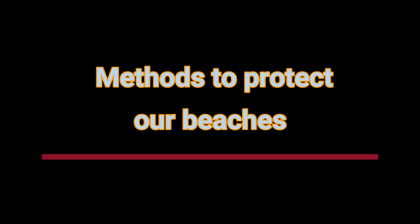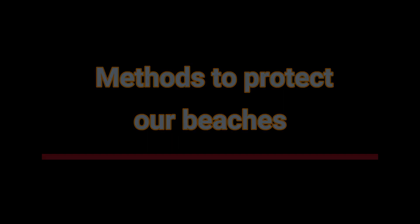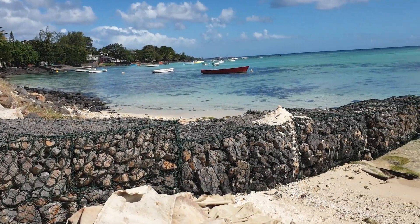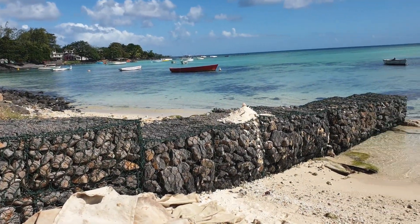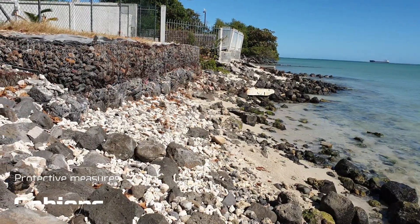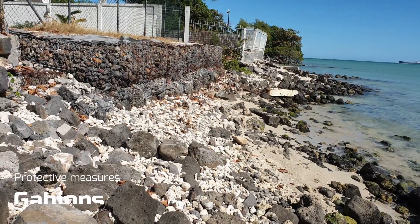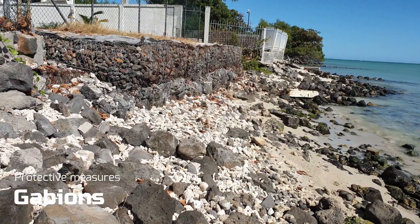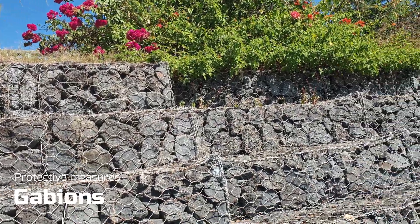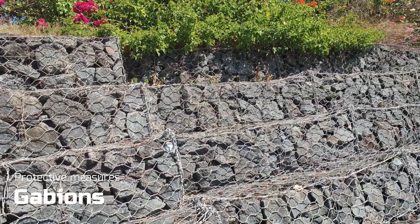So how can we protect our beaches against erosion? Firstly, by the use of gabions. Gabions decrease wind, tidal and wave energy, thus preventing beach erosion.